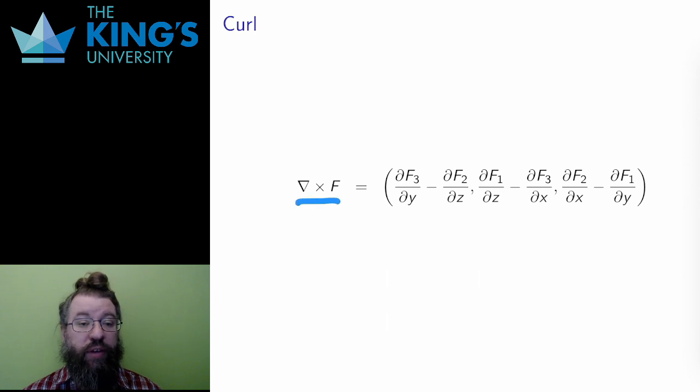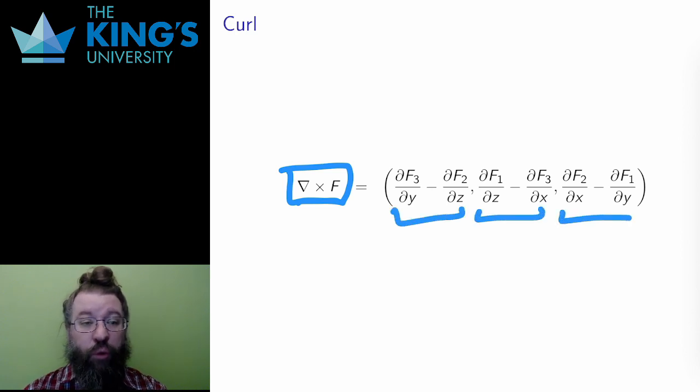This is, of course, confined to vectors in R3, since the cross product is not defined in other dimensions. But in R3, I can take the cross product of the operator nabla and a vector field f. In terms of components, it has this form.